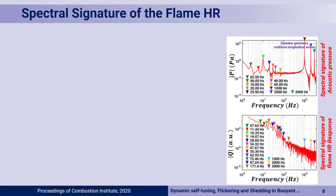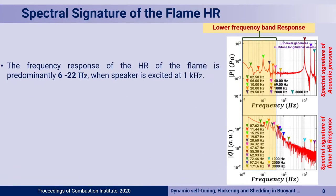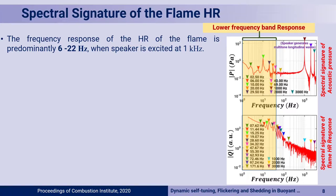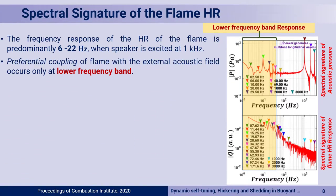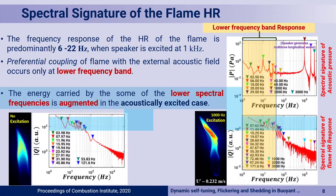Looking at the spectral signature of the flame mapped with acoustics: no matter at what frequency you excite the flame, it only gets locked in the low frequency band — the buoyant unstable mode of the flame — normally about 6 to 22 Hz, and can be higher depending on the droplet size. As you can see from the pictures comparing no excitation to 1 kHz excitation, all frequency bands are present in both cases. However, some frequencies carry more energy because of feeding through the acoustics, and as a result the flame shows preferential perturbations at the low frequency band.